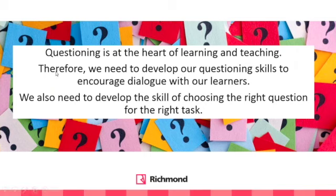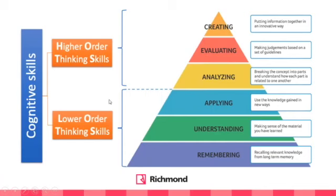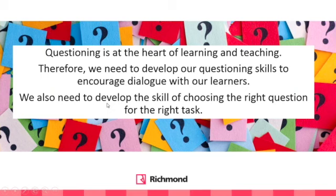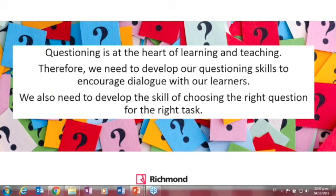There are different kinds of thinking: lower-order thinking skills (LOTS) and higher-order thinking skills (HOTS). The very basic level is remembering — recalling relevant knowledge from long-term memory, which includes memorization. Remembering is important but it is at the bottom. It is a lower-order skill. It is important, but you should not stop there.